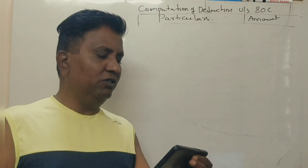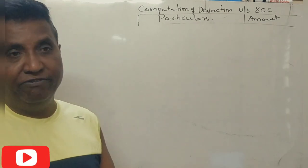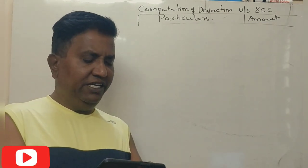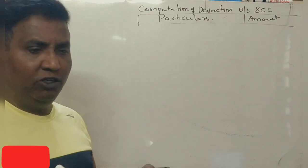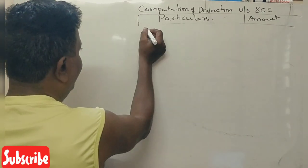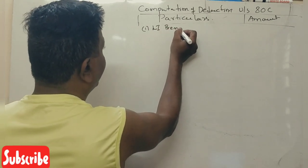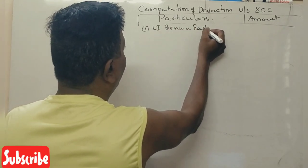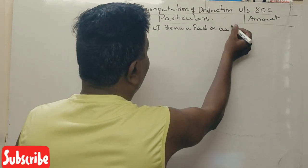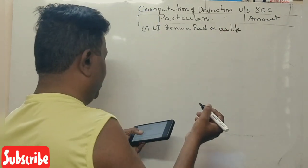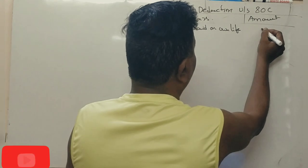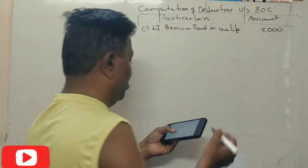Premium paid 5,000 on life policy of his own life. Now, this is the amount of policy that is not good. So that is the first point. LIC premium paid on own life, this amount is 5,000 rupees. This is the full amount of deduction.